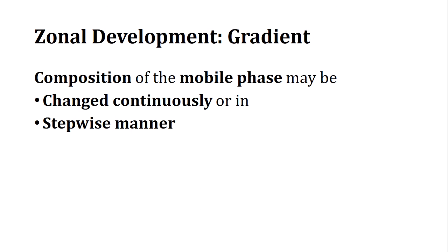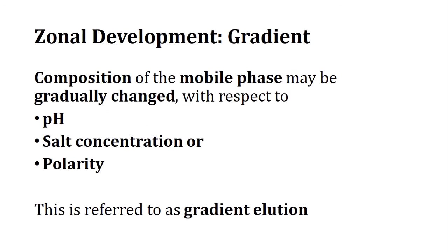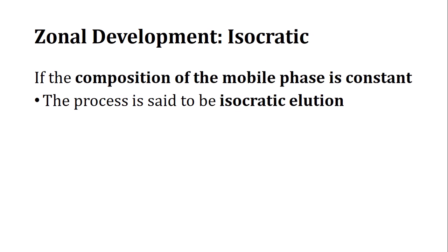In gradient elution, the composition of the mobile phase may be changed continuously or in a stepwise manner. An important point: if the mobile phase is a mixture of more than one miscible liquid but the composition does not change, the elution is still called isocratic. Gradient means the composition is being changed in a stepwise manner.